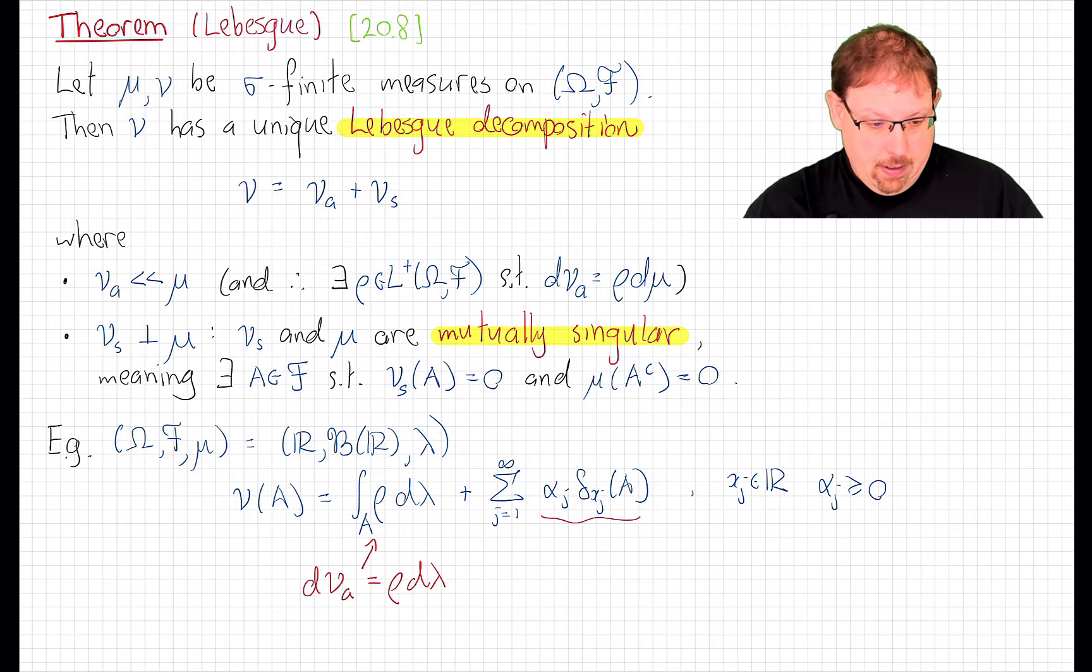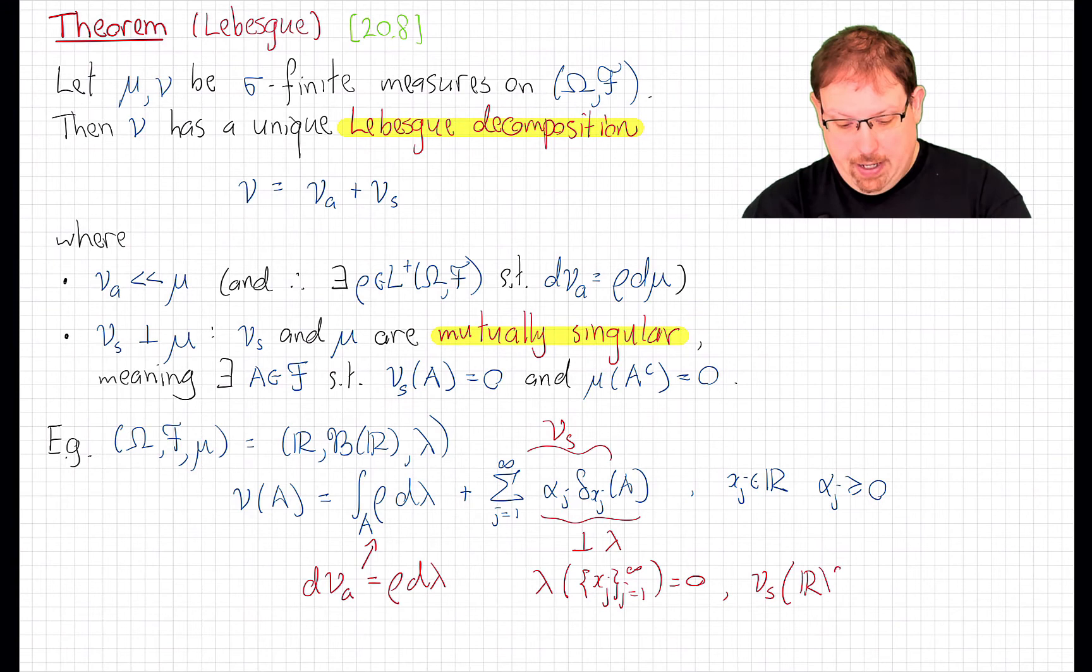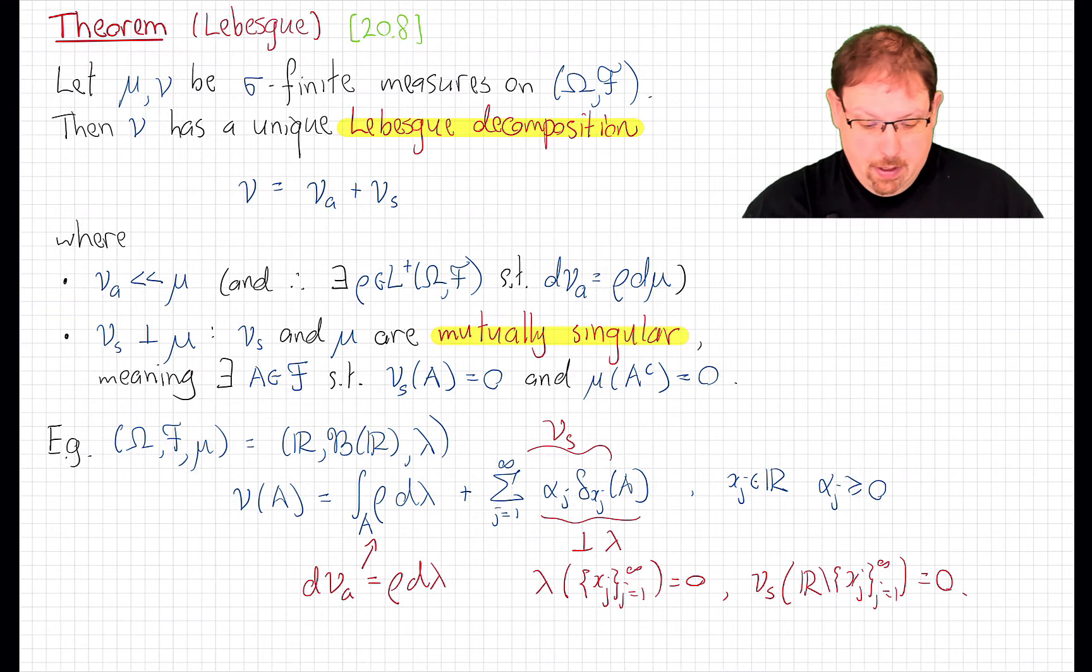And as for these, well they are all mutually singular from Lebesgue measure. In fact, the whole combination of them is because the Lebesgue measure of this countable set of points, whatever we chose them to be, is zero. Lebesgue measure of a countable set is always zero. But this singular part measure, this thing here, of the complement of that set of points is also equal to zero because those point masses put all of their mass at the points x_j. So that's a typical example of mutually singular measure from Lebesgue measure, and this is a typical kind of Lebesgue decomposition of a measure with respect to Lebesgue measure. Except I've misled you a little bit if you think that typical means everything looks like this.